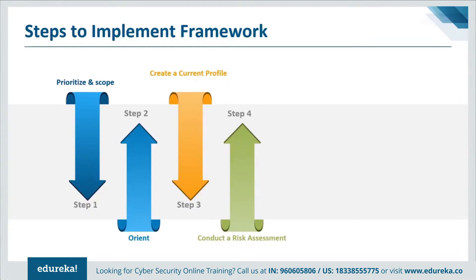The fourth step is to conduct a risk assessment. This assessment could be guided by the organization's overall risk management process or previous risk assessment activities. The organization analyzes the operational environment to discern the likelihood of a cybersecurity event and the impact it could have. It is important that the organization identify emerging risks and use cyber threat information from internal and external sources to gain a better understanding of the likelihood and impact of cybersecurity events.